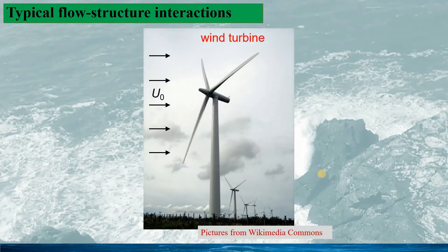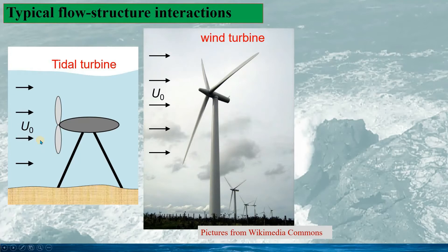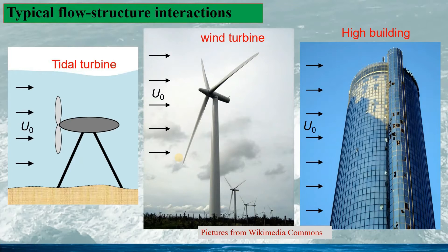In fluid dynamics, the fluid-structure interactions are the most important problems, such as the wind turbine. Generally we can take the uniform flow coming to the turbine to drive it and generate electricity. This is the same for the tide turbine — the uniform current coming to the tide turbine to drive it and generate electricity. We can also see fluid-structure interactions for flow past high buildings. So we can find many applications for the uniform flow, and this is the topic in this talk.